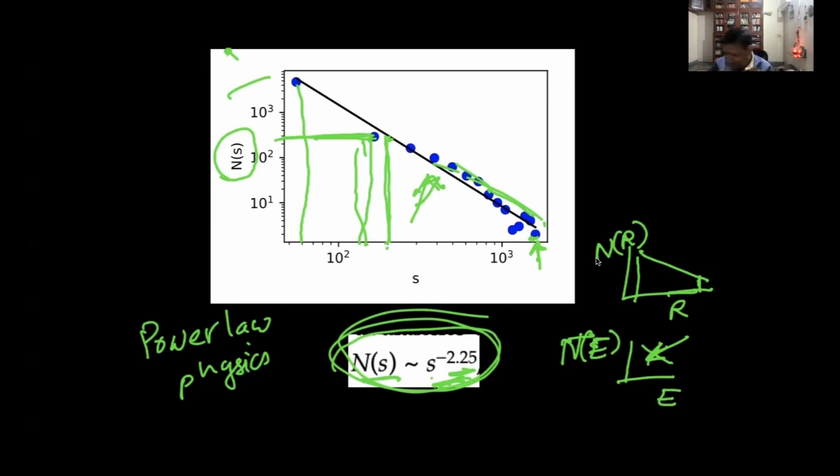If there is strong interaction, it leads to power laws. In the sun there are bursts, and the number of bursts with certain energy is a power law. In turbulent systems there are power laws. So this sandpile model is a kind of abstract model for describing power law physics.